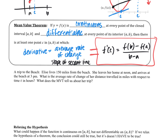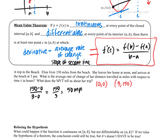If we had to be all mathy, we'd say she started at zero, zero — noon was zero and she had driven zero miles. After three hours she had driven 150 miles. So if I did that average rate of change — change in y over change in x — her average rate was 50 miles an hour.